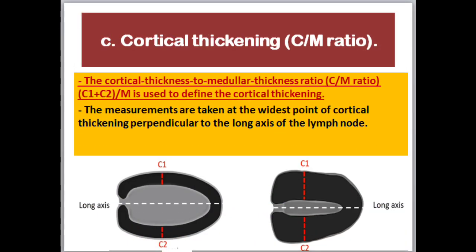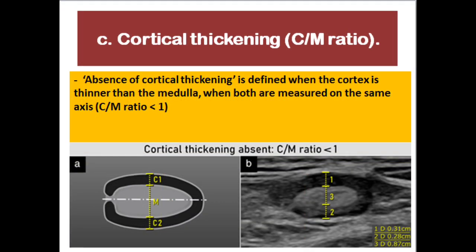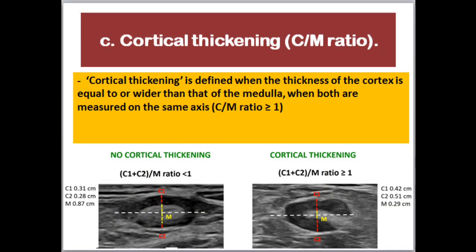Cortical thickening: C:M ratio. The cortical thickness to medullary thickness ratio, C:M ratio, is used to define cortical thickening. The measurements are taken at the widest point of cortical thickening perpendicular to the long axis of the lymph node. The maximum thickness of the cortex is measured from the corticomedullary interface to the nodal border on both sides on the same axis. The medulla is measured perpendicular to the long axis on the same axis as C1 and C2. Absence of cortical thickening is defined when the cortex is thinner than the medulla, with a ratio less than one. Cortical thickening is defined when the thickness of the cortex is equal to or wider than that of the medulla, when both are measured on the same axis — C:M ratio more than one.